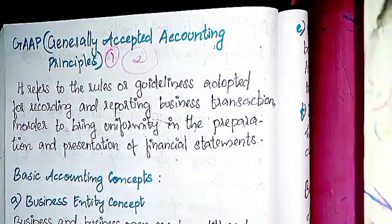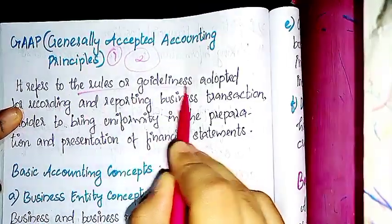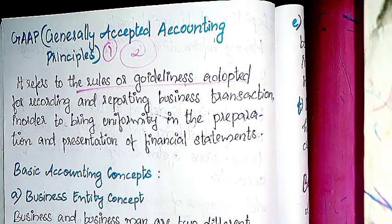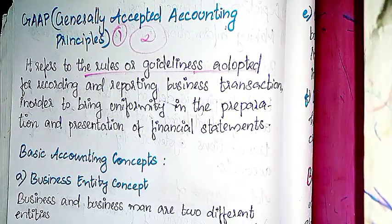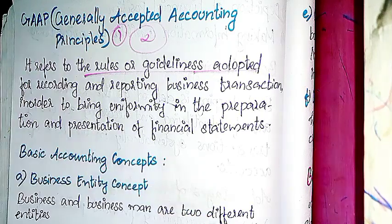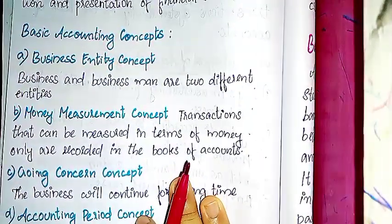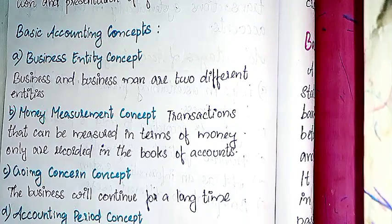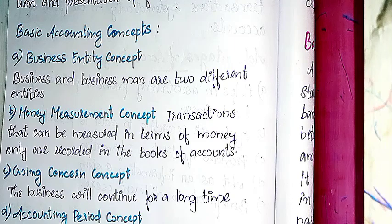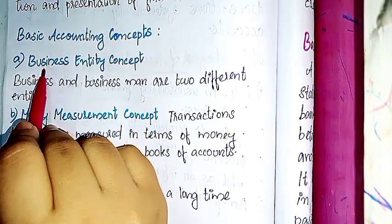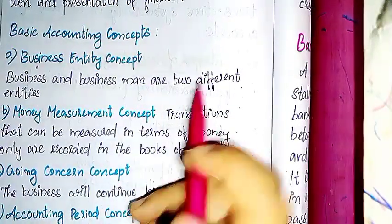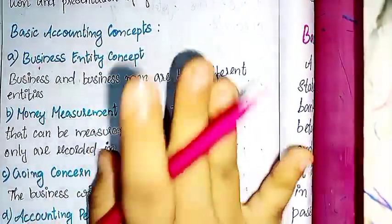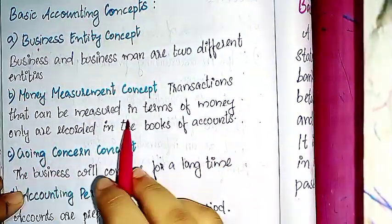Next is Generally Accepted Accounting Principles — GAAP. It refers to the rules or guidelines adopted for recording and reporting business transactions. Key concepts include the Business Entity Concept — business and businessman are two separate entities — and the Money Measurement Concept — only transactions that can be measured in terms of money are recorded.